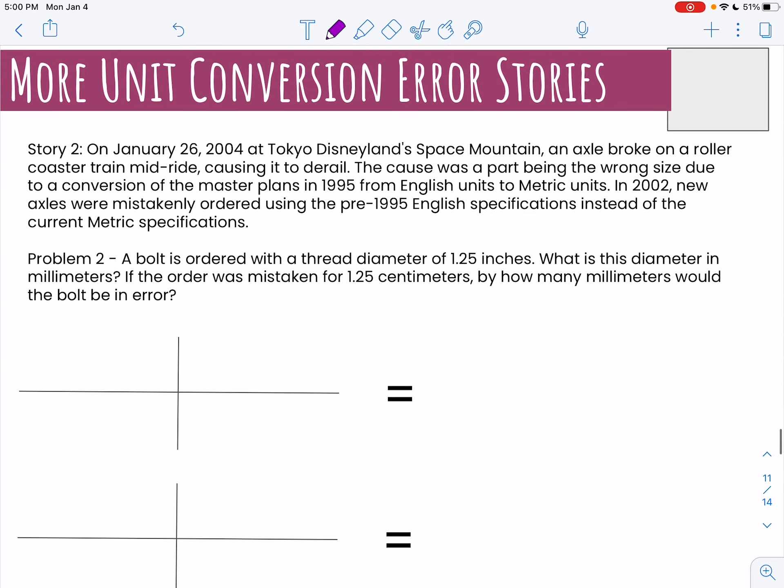The second one: at Tokyo Disneyland Space Mountain, an axle broke on a roller coaster mid-ride causing it to derail, mainly because there was a wrong size due to a conversion from English to metric units. If a bolt was ordered with a thread diameter of 1.25 inches, what is this diameter in millimeters?